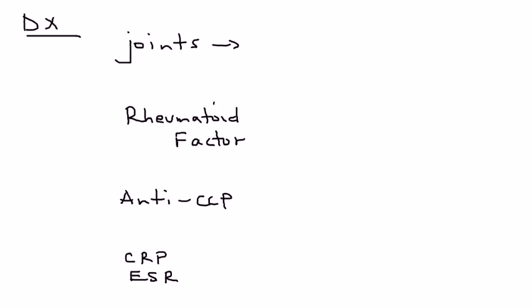First, let's start at the bottom here. CRP and ESR are essentially acute phase reactants. You can think of them as nonspecific indicators of inflammation. They tell you there's inflammation. They don't really tell you much more than that.